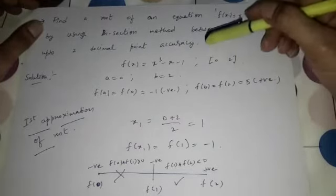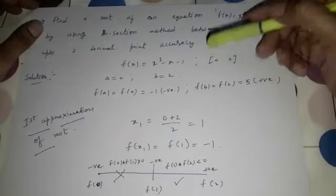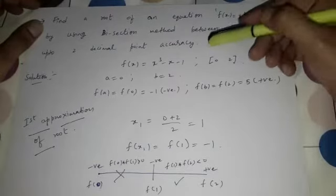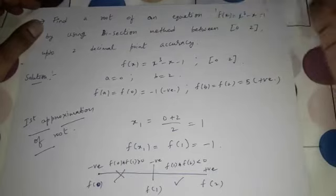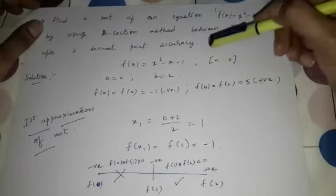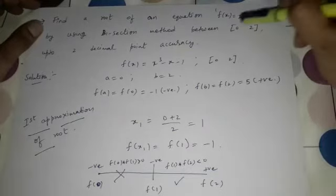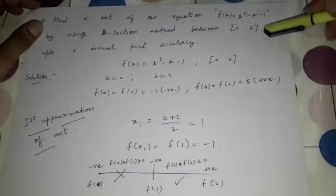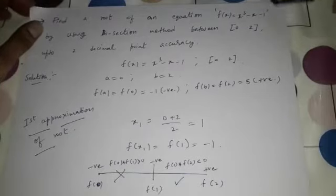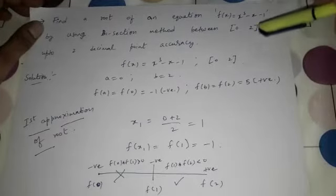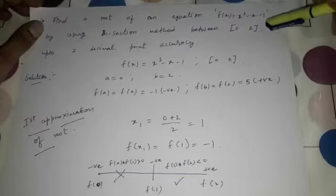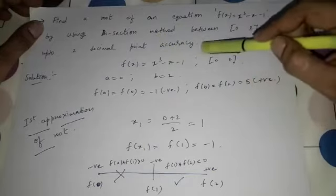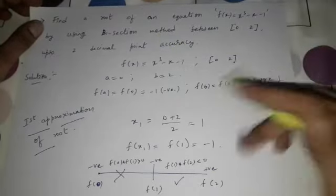When you use computers, they can perform even 1000 operations in just 1 or 2 seconds. So in computers we can get the exact root of this function. I am going to do videos on MATLAB software soon, and in that lecture series I will take up the same problem and find the exact root using software. But in this lecture, we will find the root only up to 2 decimal point accuracy.